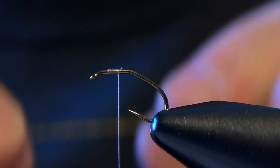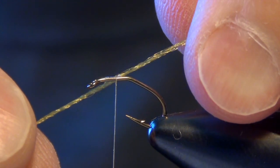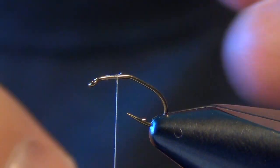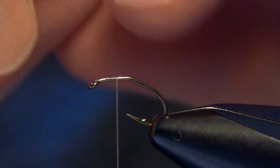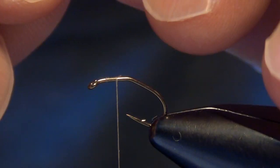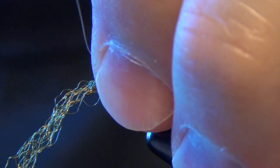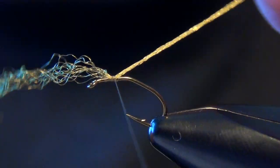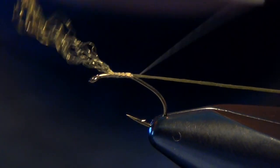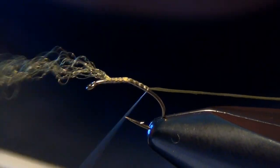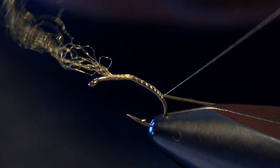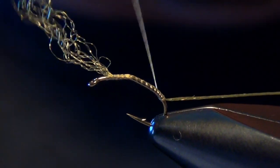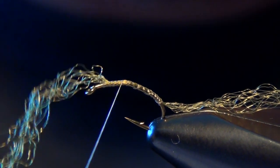I'm going to take some golden yellow Antron Zelon, any type of nylon fibers. I like to use Zelon if you can track it down. We're going to take about 10 or so fibers, pretty sparse. You don't want to overdo it on the tail. I'm just going to tie these down the shank of the hook. At this point you kind of have to dodge the hook point a little bit and be careful not to break your thread.